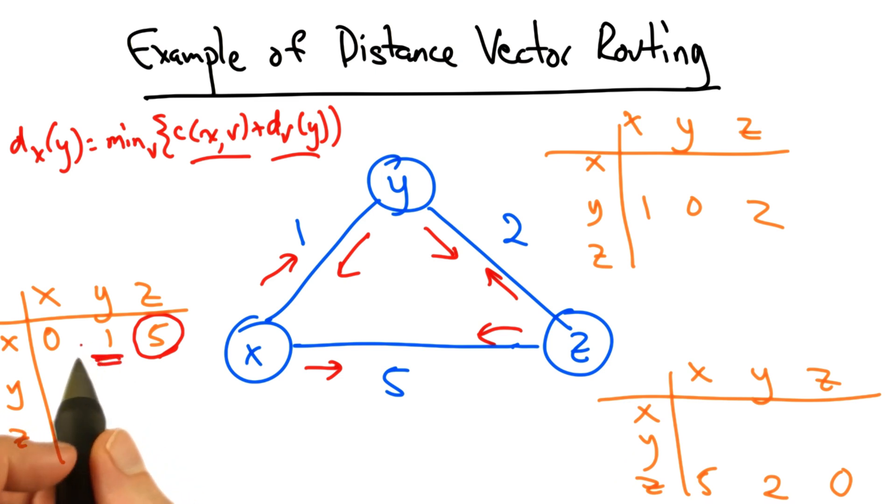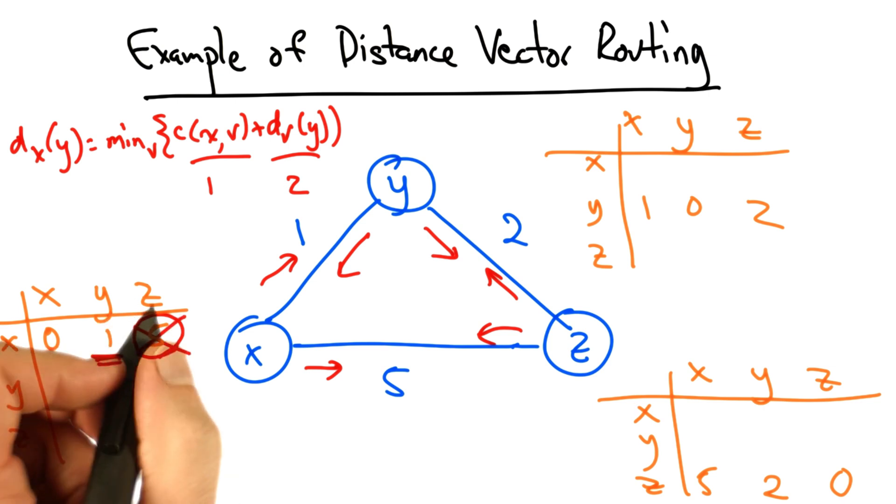So the cost between x and y is 1, and the distance between y and z as discovered by y's distance vector is 2. Therefore, x can update its shortest cost distance to z as 3.